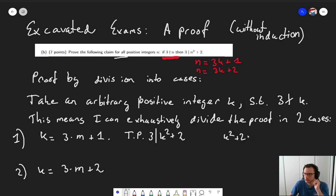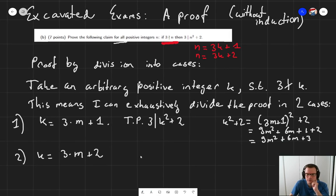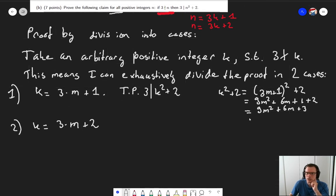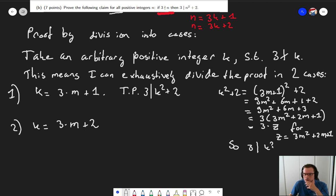So k squared plus 2 equals 3m plus 1 squared plus 2. That's 9m squared plus 6m plus 1 plus 2. That's 9m squared plus 6m plus 3. So k squared plus 3 times 3 times 3m squared plus 2m plus 1. Which means this is 3 times z, where z equals 3m squared plus 2m plus 1.